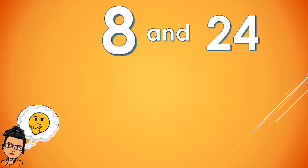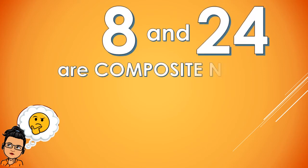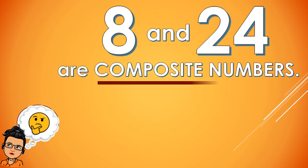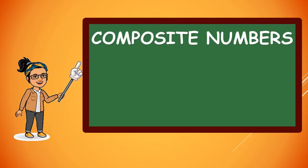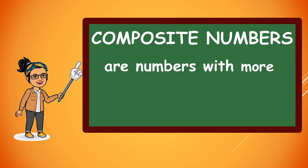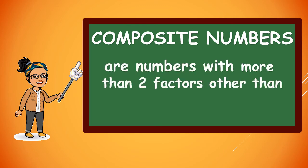So 8 and 24 are composite numbers. When we say composite numbers, these are numbers with more than 2 factors — other than 1 and itself.